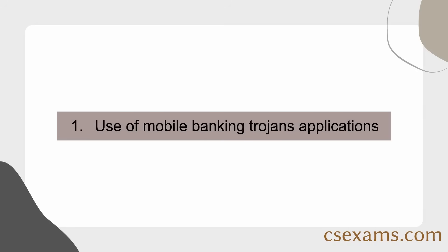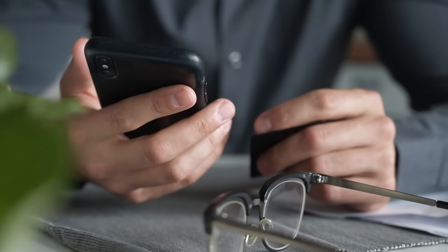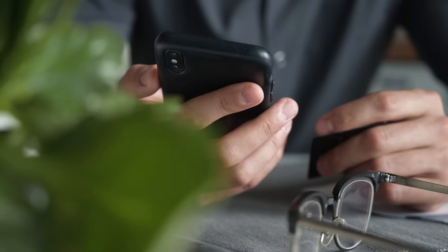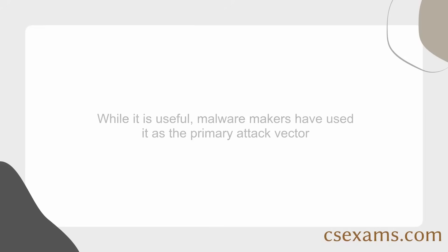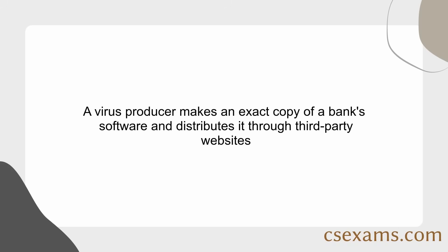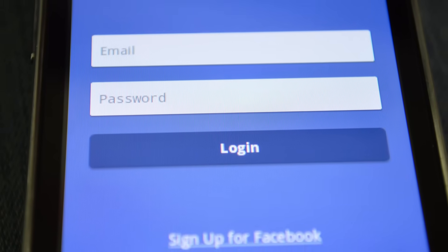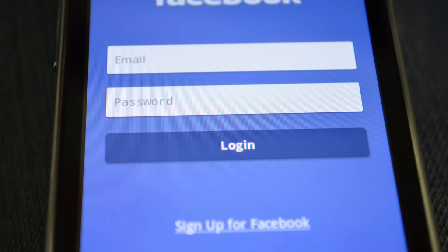Method 1: Use of mobile banking Trojan applications. With the banking apps on your smartphone, you can manage all of your finances. While it is useful, malware makers have used it as a primary attack vector. A virus producer makes an exact copy of a bank's software and distributes it through third-party websites. You enter your username and password into the software after downloading it, which is subsequently delivered to the hacker.